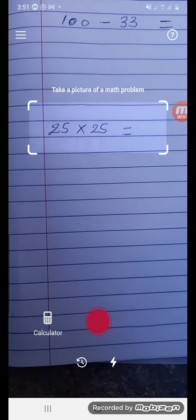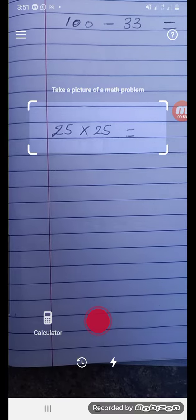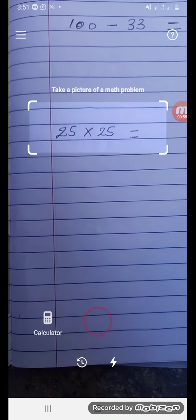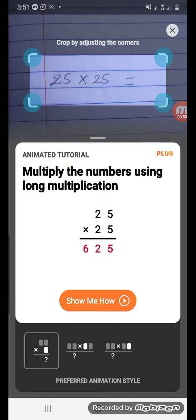This one: 25 times 25. Tap on the red circle, scanning the math question, and as you can see, 625.